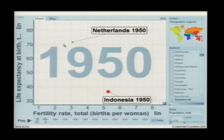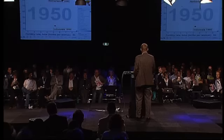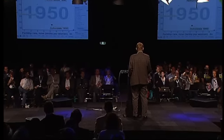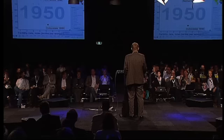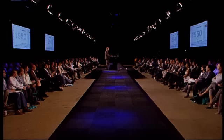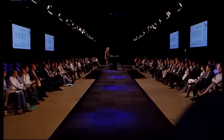Let me start in 1950, very straightforward with Indonesia and the Netherlands. On this axis down here I have the size of family. Indonesia had more than five children per woman. The Netherlands had two children per woman. It has unfortunately cut the name of this axis — it is life expectancy at birth, how long you live. In the Netherlands, you had small families and long life; in Indonesia, they had large families and short life.